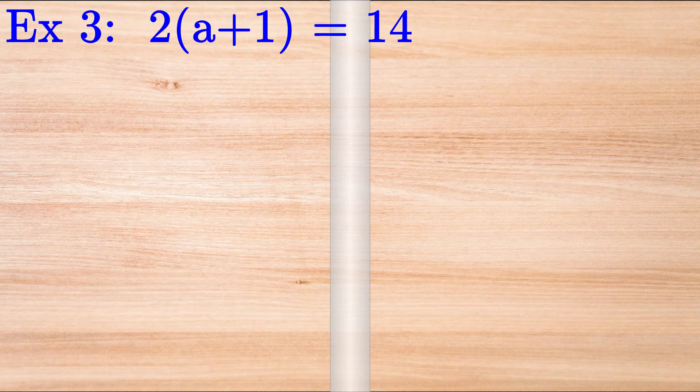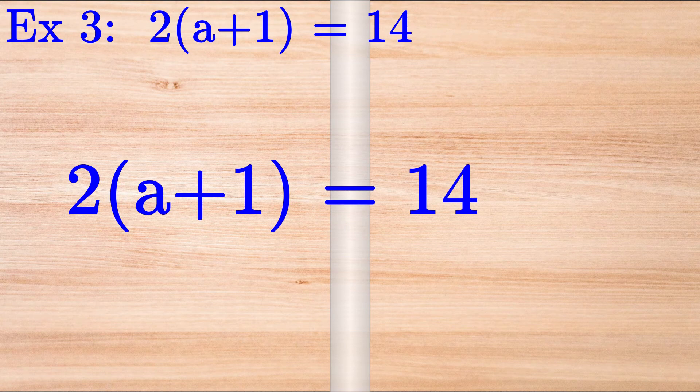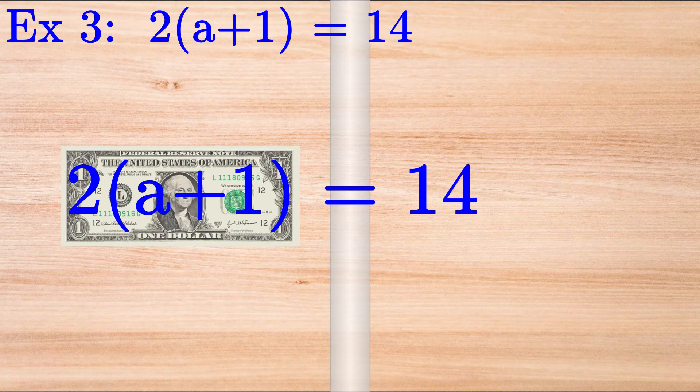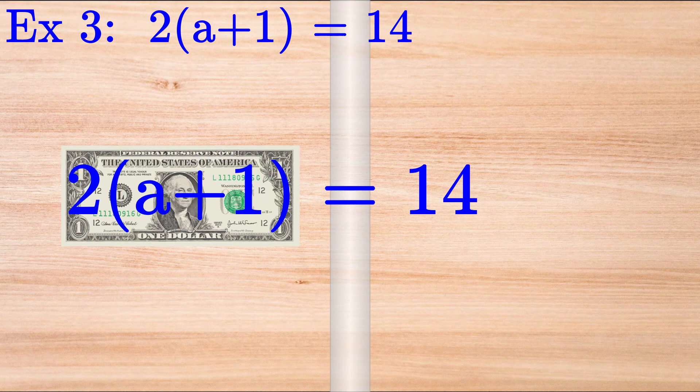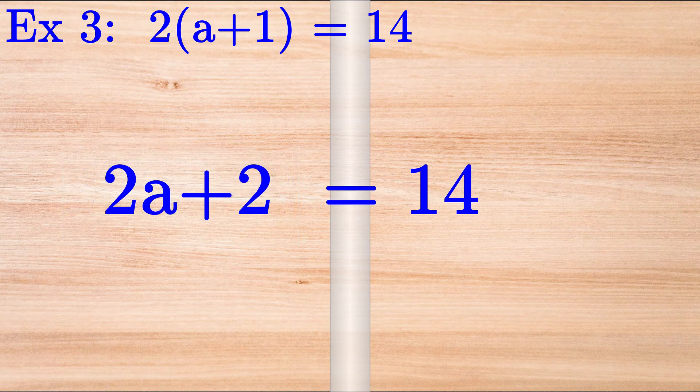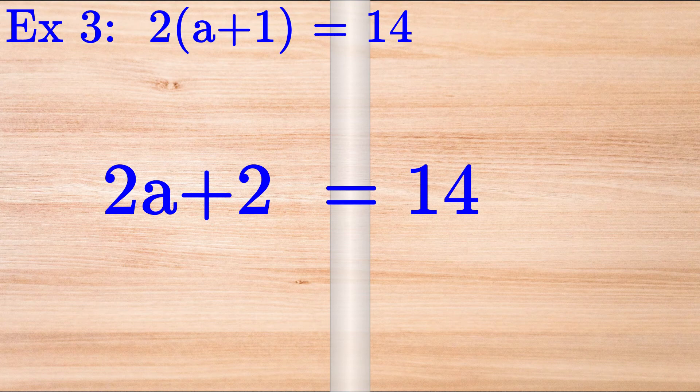Let's try one more example. Solve for A if 2 times A plus 1 equals 14. This time, the 2 times A plus 1 is like a dollar bill. We'd like to make change for it so that we can use the coin trick. This isn't difficult because we can just distribute the 2 onto both the A and the 1. Doing this, we get 2A plus 2 is equal to 14.